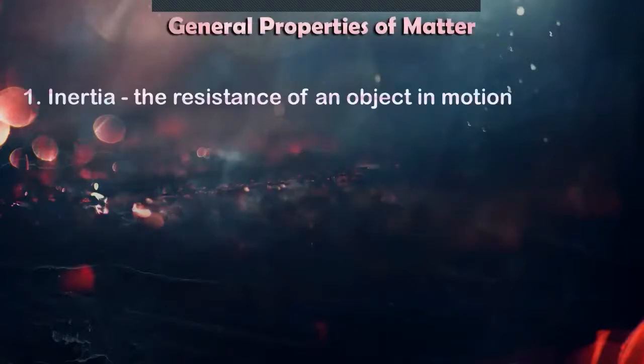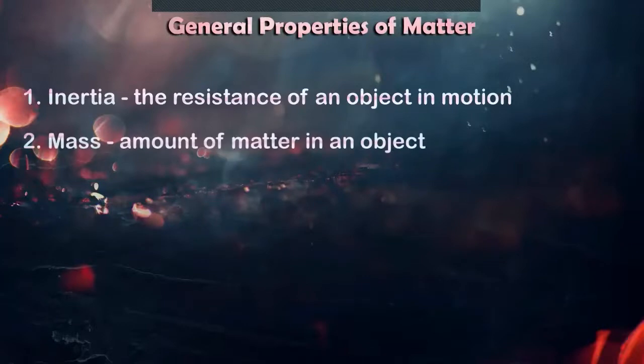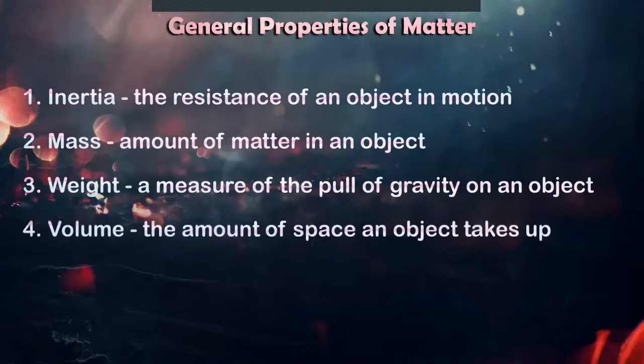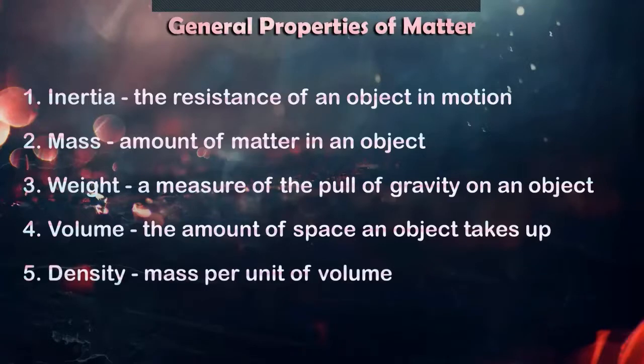Physical property: a trait of matter that can be observed or measured without changing the chemical composition of the matter. And no chemical reactions allowed. Describing matter in general could be through their inertia, the resistance of an object in motion; mass, the amount of matter in an object; weight, a measure of the pull of gravity on an object; volume, the amount of space an object takes up; and the density, the mass per unit of volume.